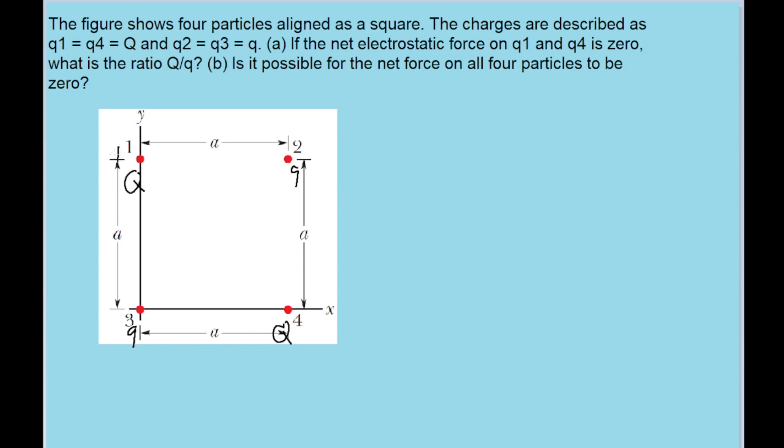For the sake of argument let's say that charge one is positively charged, that means that charge four is also positively charged since charge one and charge four have the same charge. If little q, that is two and three, also had positive charges then that would mean that because of Coulomb's law, like forces repel, opposite forces attract, there is a force pushing charge one away from the square from all three other charges and there would be nothing holding it back to give it a net charge of zero. So big Q and little q must have opposite charges.